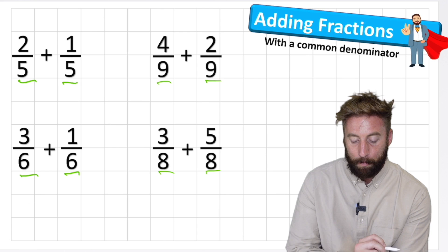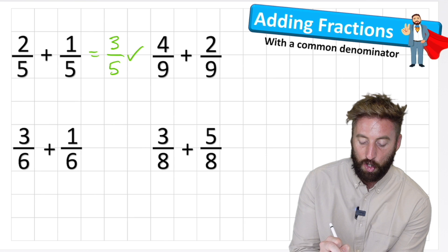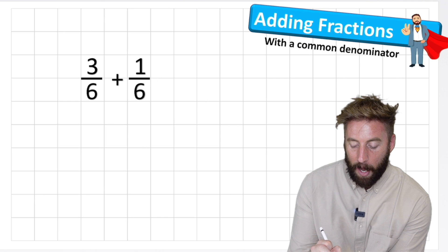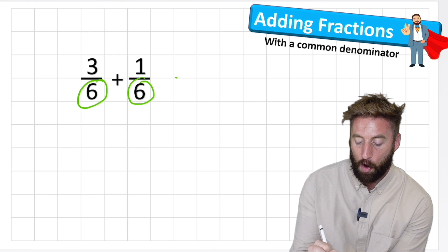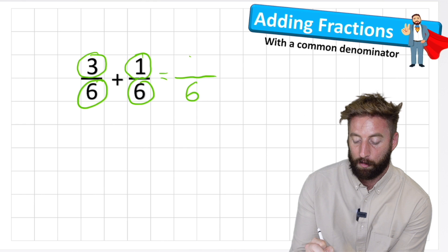Back to our questions: two fifths add one fifth equals three fifths. Question two: three sixths add one sixth. I know I'm working with sixths so my answer will also be in sixths. How many sixths do I have? Three sixths add one sixth equals four sixths.